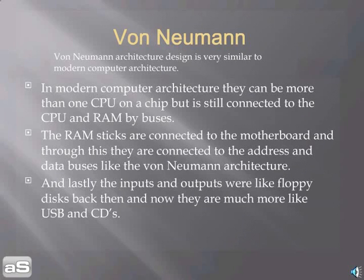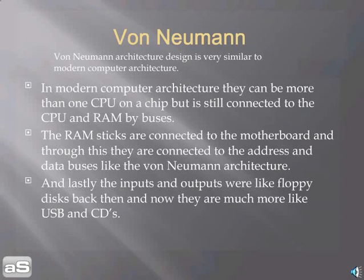Von Neumann Architecture design is very similar to modern computer architecture. In modern computer architecture there can be more than one CPU on a chip, but it is still connected to the CPU and RAM by buses. The RAM sticks are connected to the motherboard, and through this they are connected to address and data buses, like the Von Neumann architecture. The inputs and outputs were like floppy disks back then, and now they are much more like USBs and CDs.